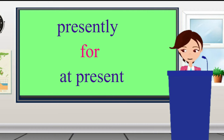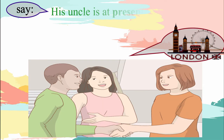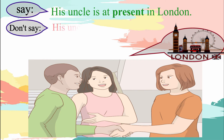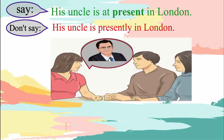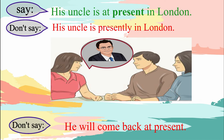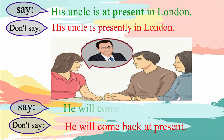Let us use these words in sentences. We say: his uncle is at present in London — this is a correct sentence. But we don't say: his uncle is presently in London. Also, if we say: he will come back at present — that is incorrect. The correct sentence is: he will come back presently, meaning he will come back soon.